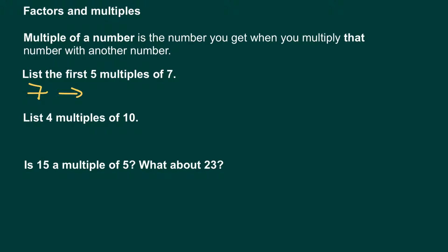The first five multiples of seven would be: seven times one is seven, seven times two is fourteen, seven times three is twenty-one, seven times four is twenty-eight, and seven times five is thirty-five. So effectively, you're just basically listing out the times tables for the number seven.